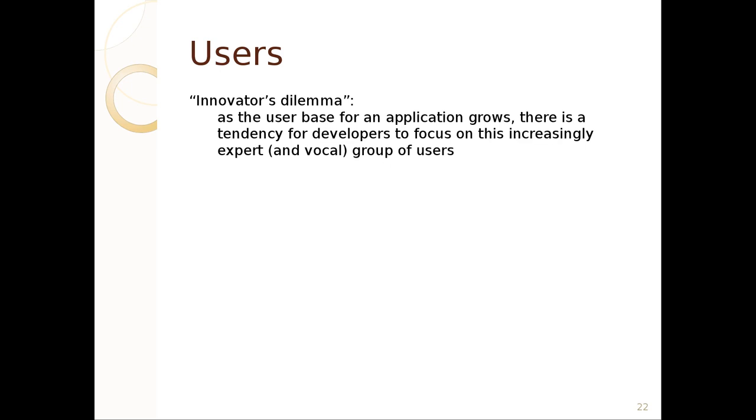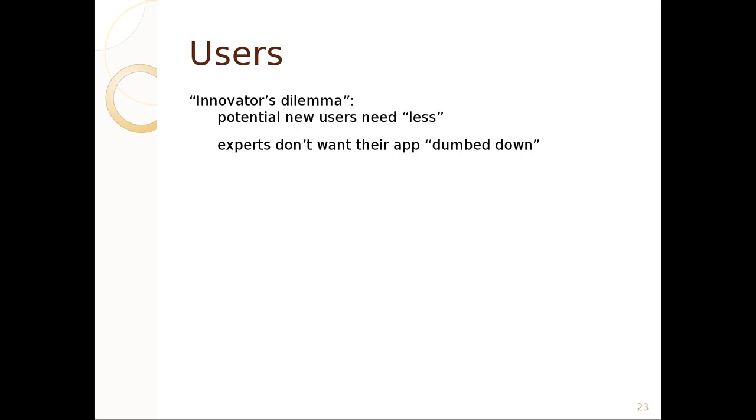In order to get representation from other kinds of users, one should probably employ focus groups or actually pay people to put people together into a room to actually evaluate your product to make sure that the requirements are appropriate. The issue with the innovator's dilemma is that the developers will focus on expert users. And this often means that the system becomes more sophisticated. It becomes more optimized for them. It also means someone can come in underneath and eat their lunch with a simpler version of the system. The issue is that new users oftentimes need less, and experts don't want their apps dumbed down. So, one might consider having different kinds of user profiles or layers, but that adds a lot of complication to the application.